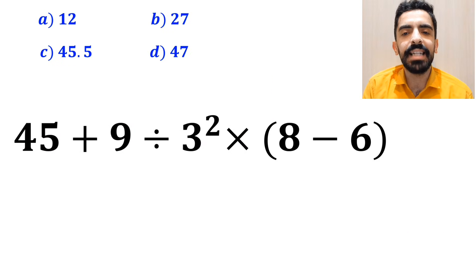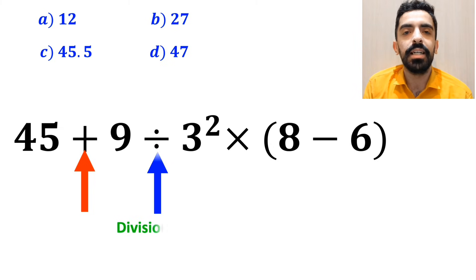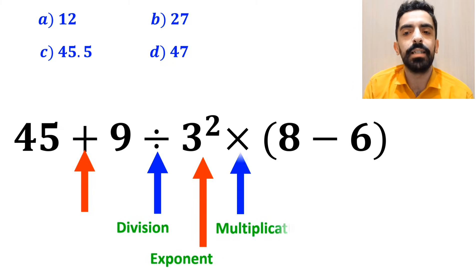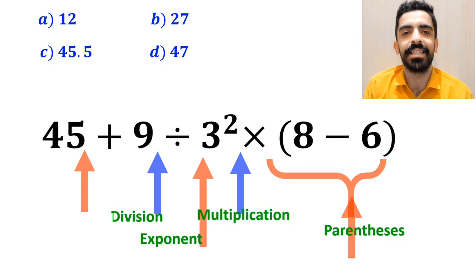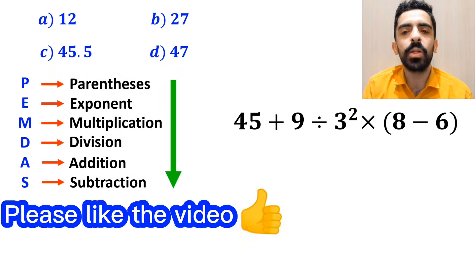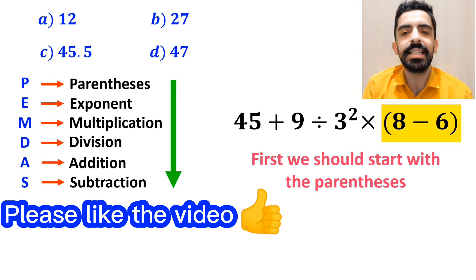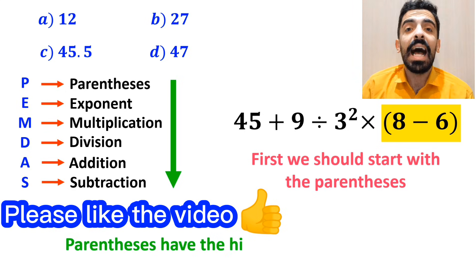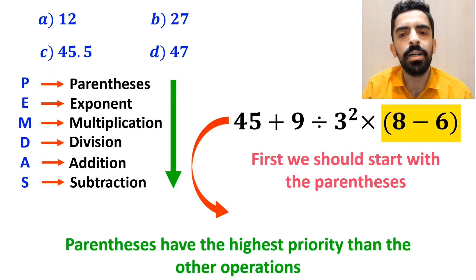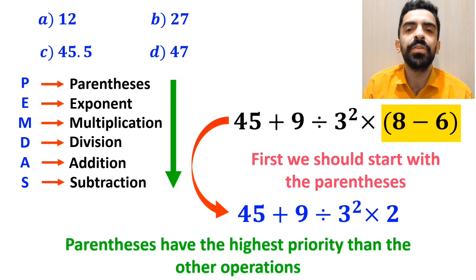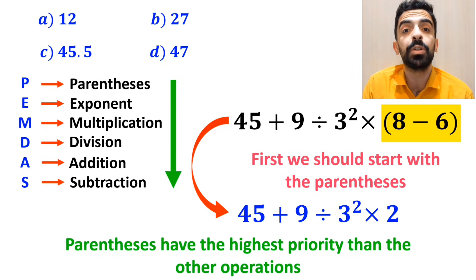As you can see in the image, in this expression, first we have an addition sign, then a division sign, and after that we have an exponent, then a multiplication, and finally parentheses. According to the PEMDAS rule, first we should start with the parentheses because parentheses have the highest priority. So we can write this expression as 45 plus 9 divided by 3 to the power of 2 times 2.